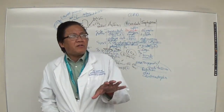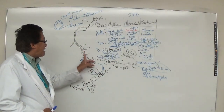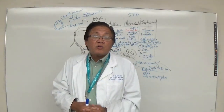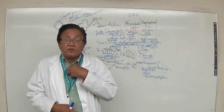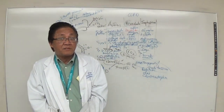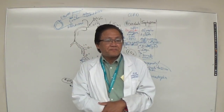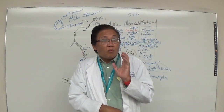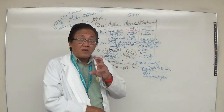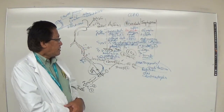A mucolytic drug is used for dry cough — when mucus is too sticky and attached to the airway wall, so coughing produces nothing. Breaking down the mucus makes it easier to cough out. Water is actually the best mucolytic — it makes mucus watery and easier to expectorate.